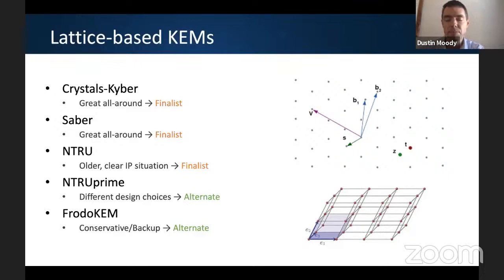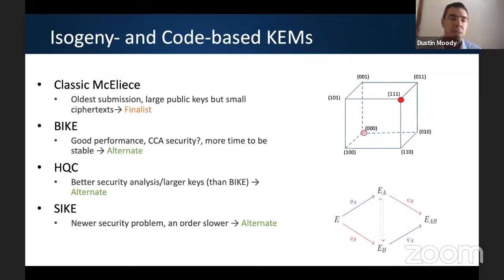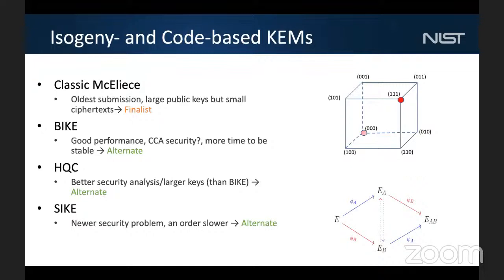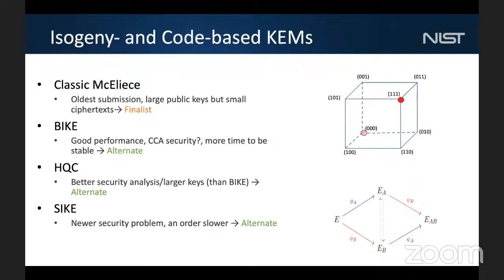The other KEMs: three are code-based. Classic McEliece, selected as a finalist, has been around a long time, has very large public keys, but the ciphertexts are the smallest out of all KEMs, which could be advantageous for some applications. We really like BIKE and HQC, but thought they needed a little more time to iron out details, so they're alternates. There's also SIKE, based on isogenies — a newer problem — which is a bit slower in performance but has the advantage of small keys, making it useful for some applications.